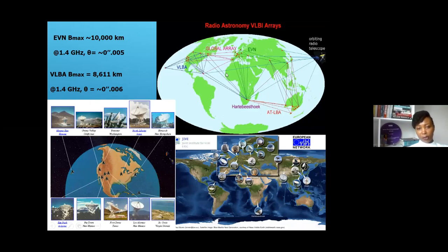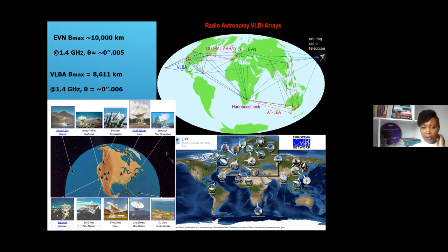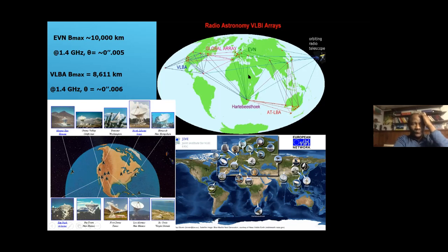This map shows the global distribution of VLBI networks. We have the EVN — the European Very Long Baseline Interferometry Network — with telescopes distributed across Europe and one in Africa. We have the Very Long Baseline Array in the US with about 10 telescopes distributed across the United States. We also have the Long Baseline Array in Australia, and a few in Asia.